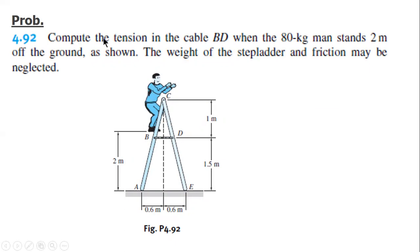Here's the problem: compute the tension in the cable BD when the 80 kilogram man stands two meters off the ground as shown. The weight of the stepladder and friction may be neglected. Since this is an even numbered problem, you can find the answer at the back of the book, and the answer is 188.35 newtons tension of cable BD.